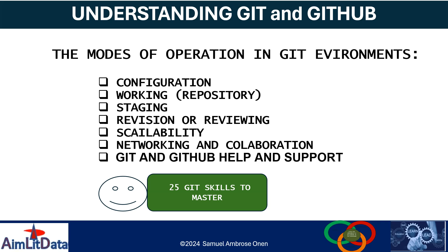To achieve all these modes of operation and to operate effectively in a Git environment, you need at least 25 Git skills to master. These skills are all about the operations of Git that you need in order to control your version, manipulate your work, share it with others, and let others share their work with you. These are the skills we are going to use in this course so that you can have Git and GitHub at your fingertips.